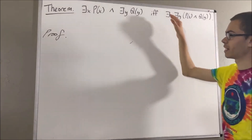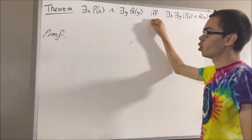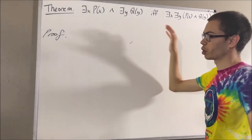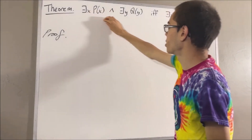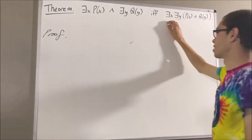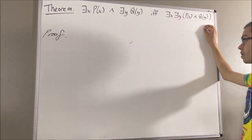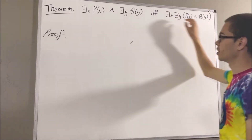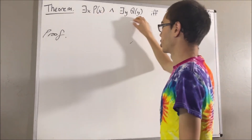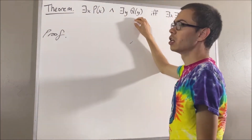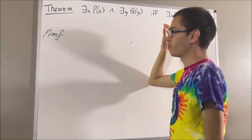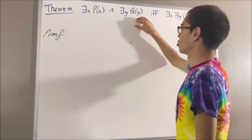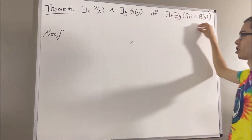Since we're trying to prove a statement containing if and only if, what we're going to do is we're going to prove if this is true then this is true, and then we're going to prove if this is true then this is true. Let's start out by proving if this is true, then this is true.